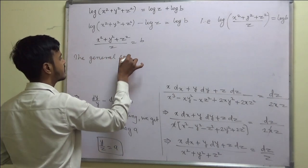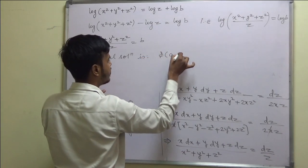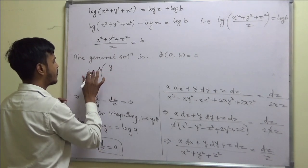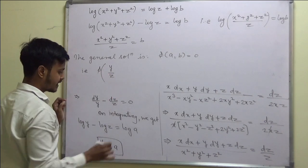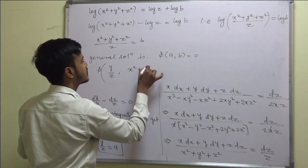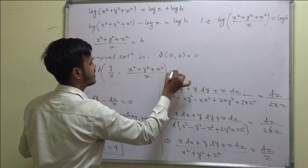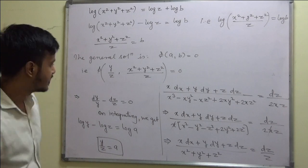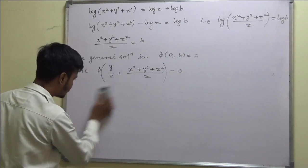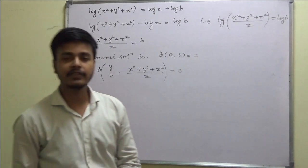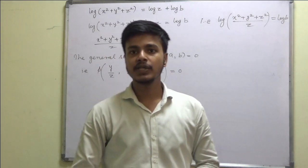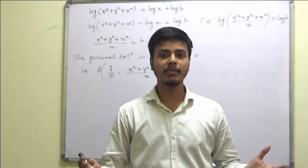Don't forget to write the general solution. The general solution is φ(a, b) = 0, where a = y/z and b = (x² + y² + z²)/z. So φ(y/z, (x² + y² + z²)/z) = 0. That is the solution of this problem. I hope the variety of examples in this video are helpful. Thank you for watching. Enjoy learning mathematics.